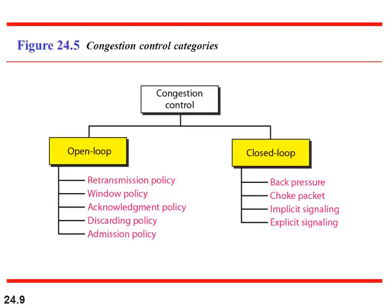Open loop congestion control techniques try to prevent congestion in the network, executed either by the source node or by the destination node — the network itself does not execute any mechanism. The first technique is retransmission policy. Once a packet is dropped, the sender does not receive an acknowledgement and retransmits the packet, which increases load and worsens congestion. So instead of using simple retransmission, we use a good retransmission policy — for example, the sender waits for some duration before retransmitting, allowing the network time to recover from congestion.